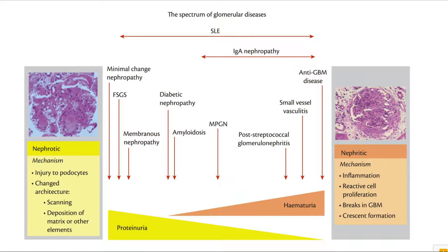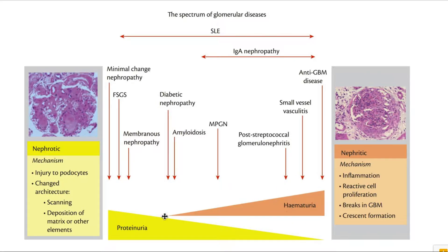Glomerulonephritis is a spectrum of diseases. We have the nephrotic spectrum, which is mostly associated with proteinuria — lots of protein in the urine. On histology, we mostly see membrane changes. On the other side of the spectrum, we have nephritic syndrome, which is associated mostly with hematuria, and on histology we see hypercellular glomeruli. Lupus spans the entire spectrum, from nephrotic to nephritic. IgA nephropathy tends to be more nephritic, along with anti-GBM disease, the ANCA vasculitides (P-ANCA, C-ANCA), and post-strep.